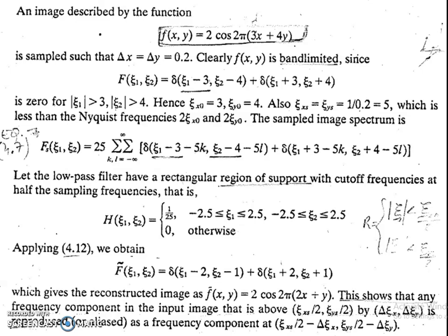I am giving you this as an assignment: obtain the reconstructed signal when zeta_xs = zeta_ys = 10. With that, the topic of image sampling is completed.